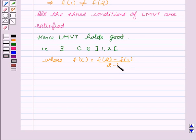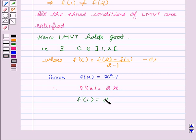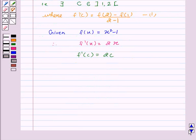Now, we are given f(x) equal to x squared minus 1, therefore F'(x) equal to 2x and F'(c) equal to 2c.